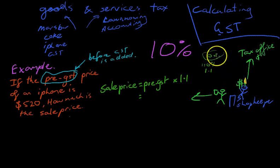Now, if that explanation didn't make a lot of sense to you, don't worry. What you have here is a really simple formula. The sale price equals pre-GST times 1.1.